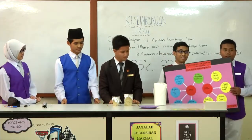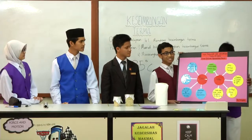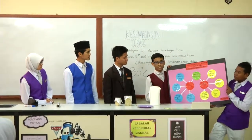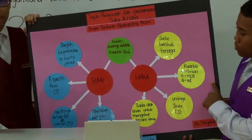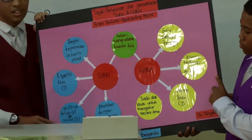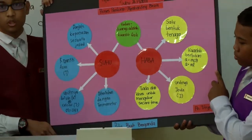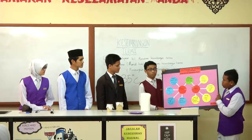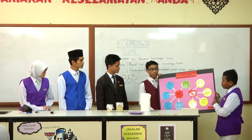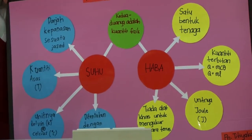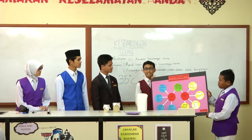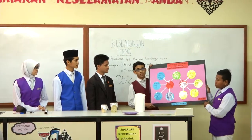Haba dan suhu ialah dua perkara yang berbeza. Suhu ialah darjah kepanasan bagi suatu objek. Kuantiti asasnya ialah temperature dan simbolnya adalah T. Unitnya adalah Kelvin atau Celsius; 0 darjah Celsius bersamaan dengan 273 Kelvin. Suhu boleh diukur dengan menggunakan termometer. Suhu turut dipengaruhi oleh tenaga kinetik molekul-molekul; semakin tinggi tenaga kinetik molekul, maka semakin tinggilah suhu objek tersebut.